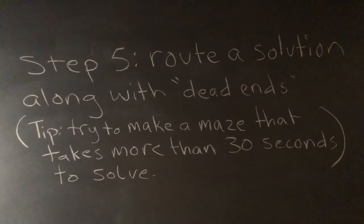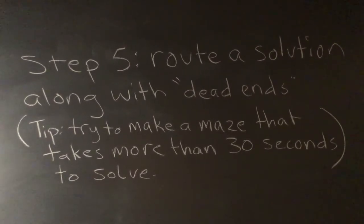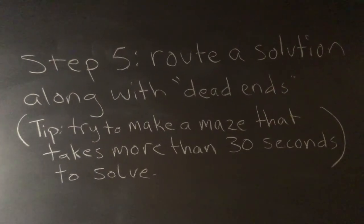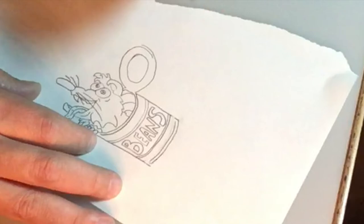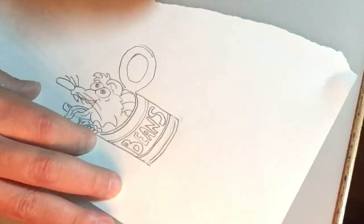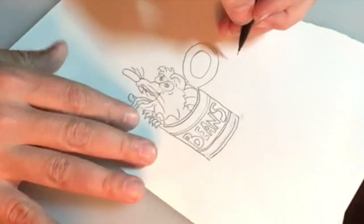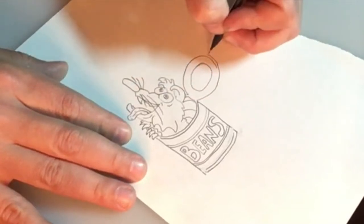Step five: route a solution along with dead ends. Try to make a maze that takes more than 30 seconds to solve. Now it's time to make the routes. When you're making the routes, make sure that you're giving a path wide enough for a pencil to fit through.